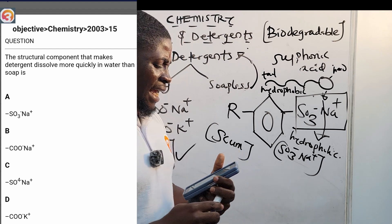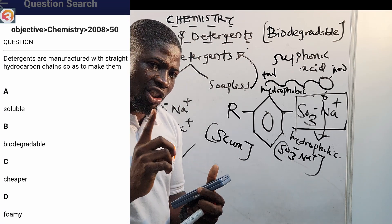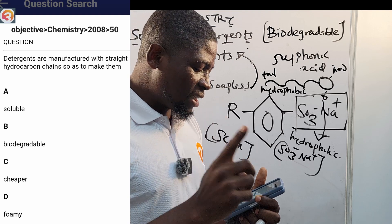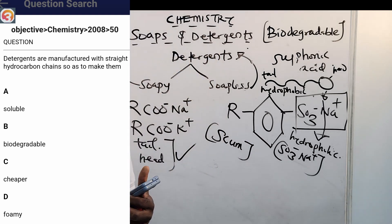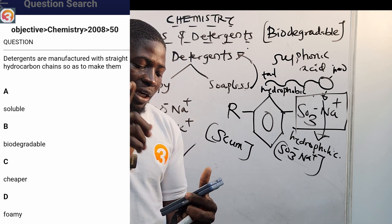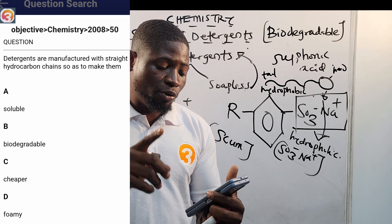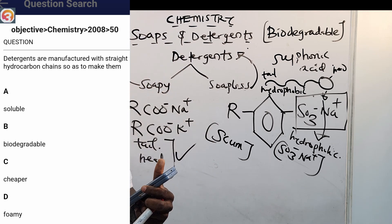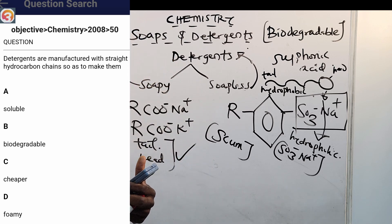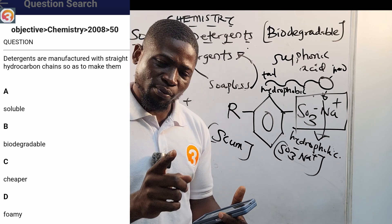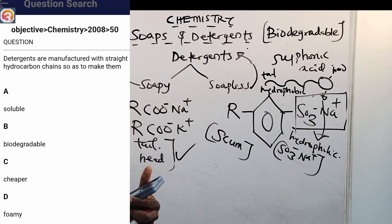2008, number 15: detergents are manufactured with straight hydrocarbon chains so as to make them — A: soluble, B: biodegradable, C: cheaper, D: foaming. The reason is to make them biodegradable, so they can be easily broken down into smaller particles. Correct answer is B.